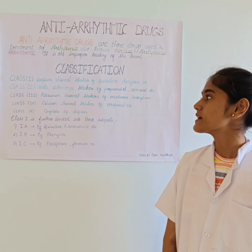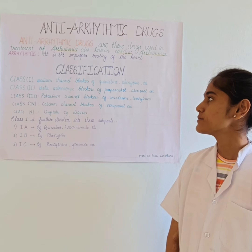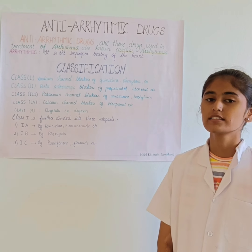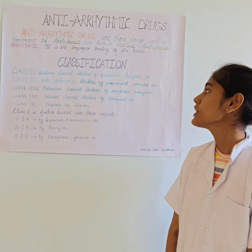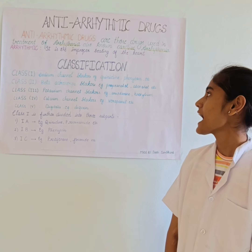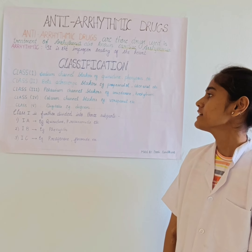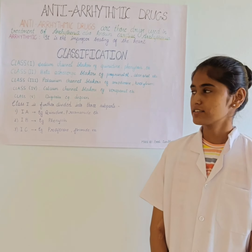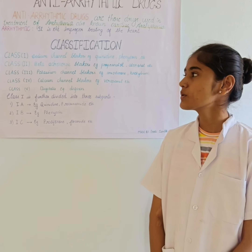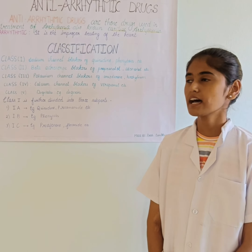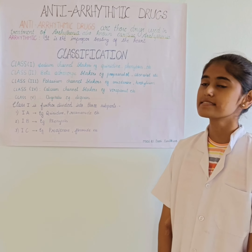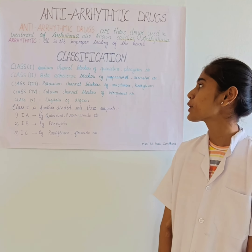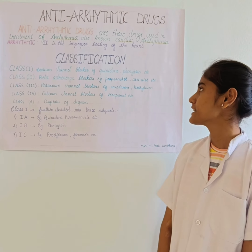The class 1 group is the sodium channel blocker. Examples of class 1 are cunidyle and phenotype. Class 2 is a beta adrenergic blocker. The examples are propanol and atinos.